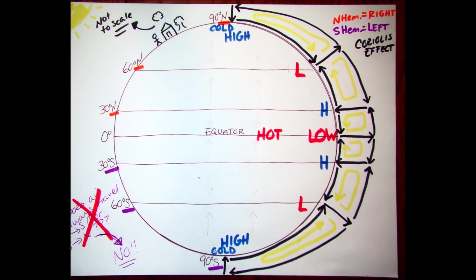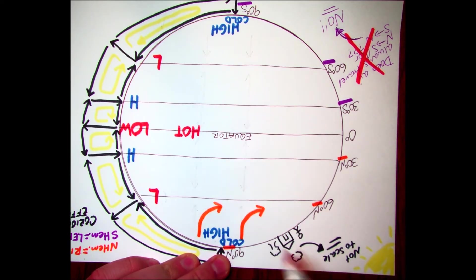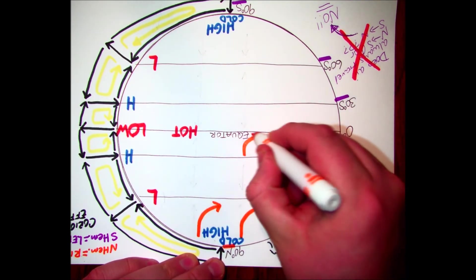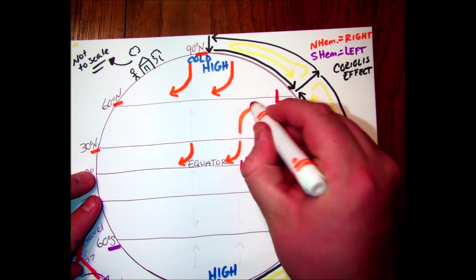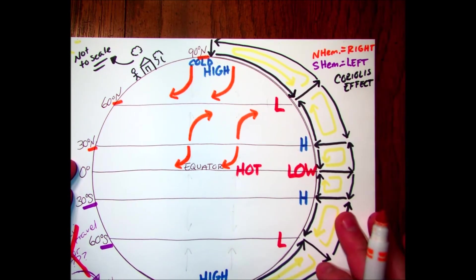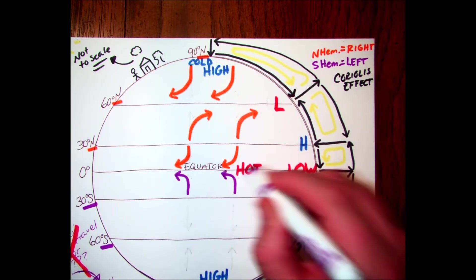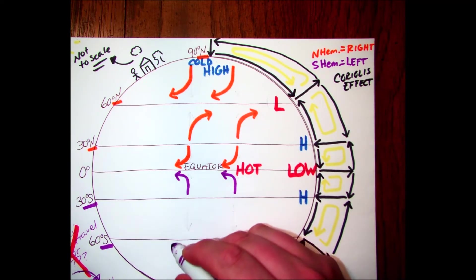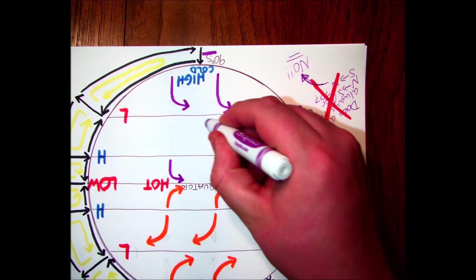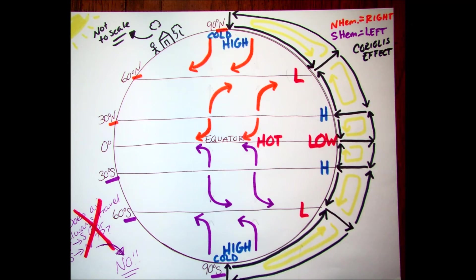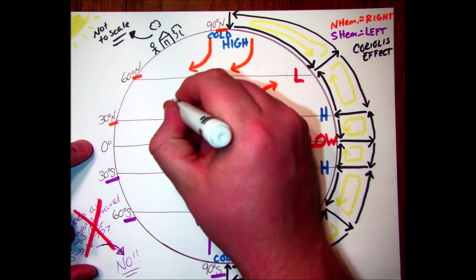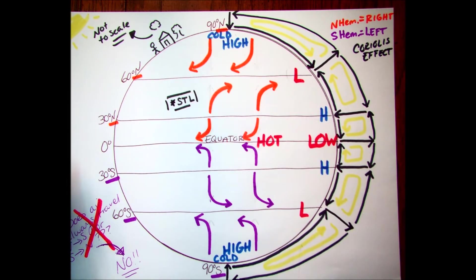The air is still going to travel from high to low pressure, but as it does that, because of the Earth's rotation, it's going to get deflected. In the northern hemisphere the air gets deflected to the right from the direction it's traveling, and in the southern hemisphere it gets deflected to the left. That's the Coriolis effect making that work. The spin of the Earth causes everything to get deflected, and it has to do with how fast it spins at the equator versus at the poles.